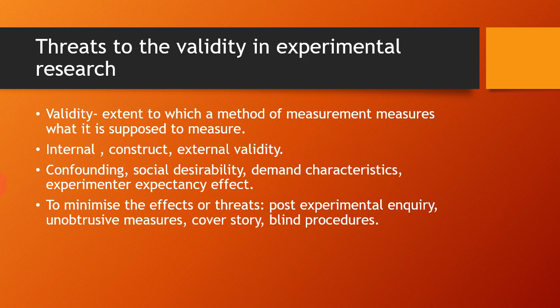Threats to validity in experimental research: validity refers to the extent to which a method of measurement measures what it is supposed to measure. There is internal, construct, and external validity. The validity of an experiment may be threatened due to confounding variables, which is a failure to separate two variables with the result that their effects cannot be independently ascertained. For example, if in an experiment on memory and age, all older participants are female and all younger are male, then sex and age are confounded.